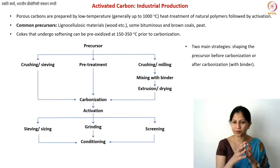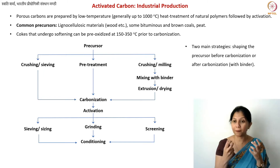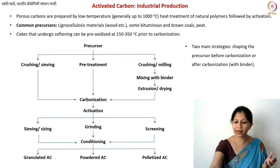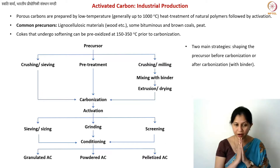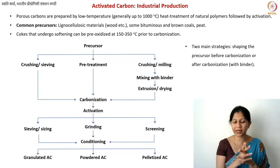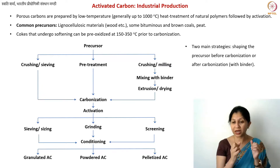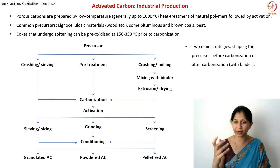At the end, you will perform some conditioning — a finishing step — to ensure that you have a material with good purity and uniformity. Finally, you will have different types of activated carbons: granulated, powder, or pellets. The idea is that you either perform the shaping in the precursor itself, or you have the material and afterwards use a binder.